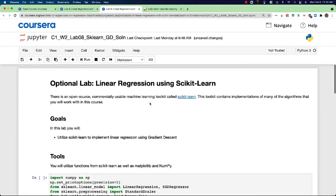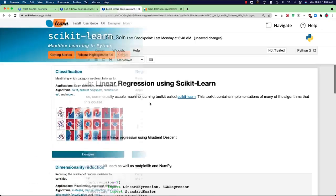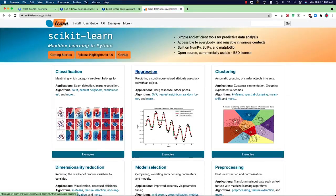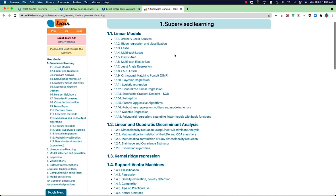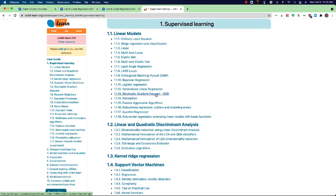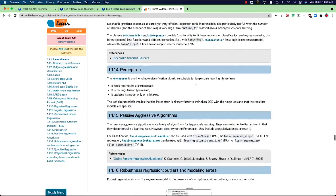There's also another optional lab after that one that shows how to use a popular open source toolkit that implements linear regression. Scikit-learn is a very widely used open source machine learning library that is used by many practitioners in many of the top AI, internet, and machine learning companies in the world.